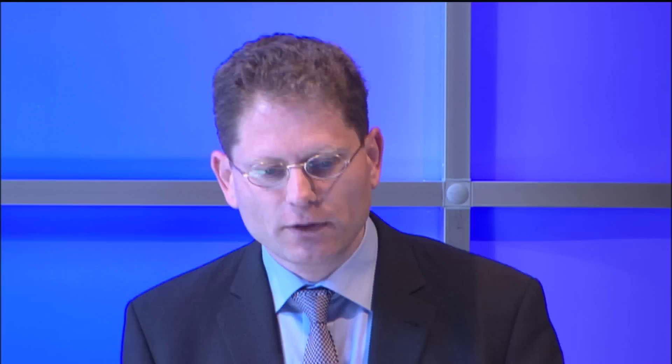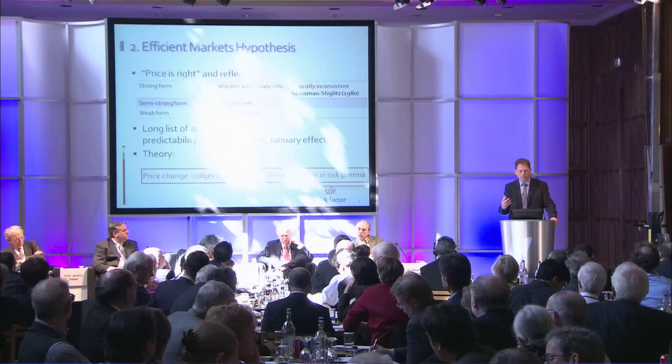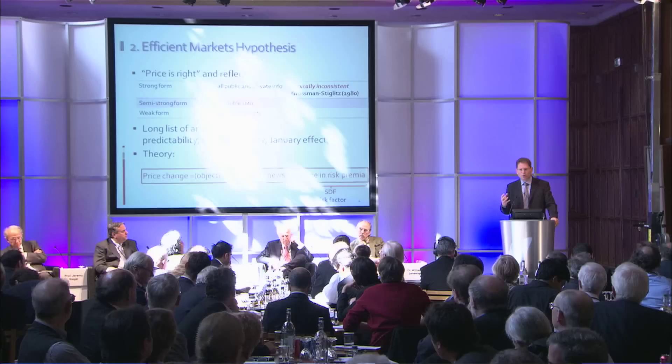The efficient market hypothesis derives from rational expectations — that's the 'price is right' hypothesis. There are three different forms: the strong form, semi-strong form, and the weak form. The strong form, which says the price reflects all information — private and public — is essentially logically inconsistent. That goes back to the famous Grossman and Stiglitz paper in the American Economic Review of 1980: if it's costly to collect information and you can read it for free in the price, nobody will collect information. But if nobody collects information, how can it be reflected in the price?